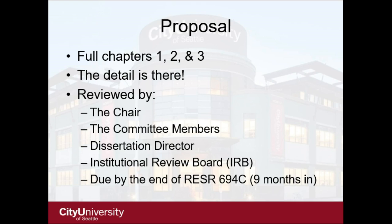The proposal is full chapters 1, 2, and 3. Chapter 1 is a summary — you essentially fill out your prospectus and make it stronger. Chapter 2 is your literature review and Chapter 3 is your methodology, which must describe in detail exactly what you're going to do and how. The proposal is reviewed by your chair, committee members, and the dissertation director. Once the proposal is passed by the dissertation director, you go to the Institutional Review Board to get final approval for your study.